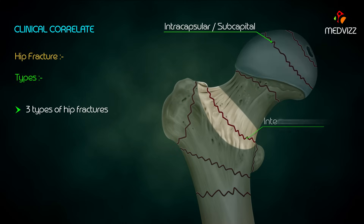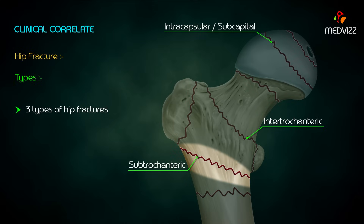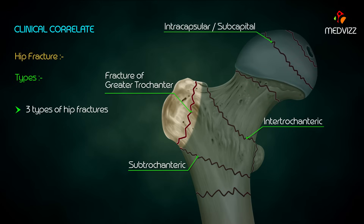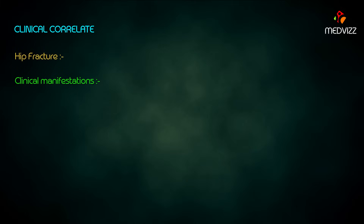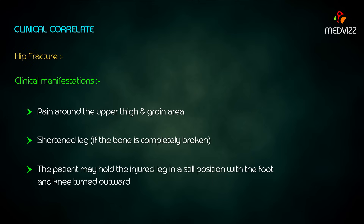Intracapsular or subcapital fractures occur at the junction of the head and neck and lie within the articular capsule. Intertrochanteric fractures occur between the two trochanters. Subtrochanteric fractures occur below the lesser trochanter. There are also fractures of the greater trochanter and lesser trochanter. Clinical manifestations include pain around the upper thigh and groin area, and a shortened leg; the patient may hold the injured leg in a still position with the foot and knee turned outwards.